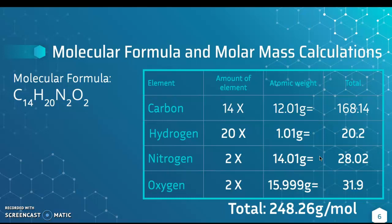The molecular formula for the drug is C14H20N2O2, meaning there are 14 carbons, 20 hydrogens, 2 nitrogens, and 2 oxygens. In order to calculate the molar mass, we must take the amount of each element and multiply it by its atomic weight. After we've done that for each element, we add it up. The molar mass of Pindolol came out to be 248.26 grams per mole.